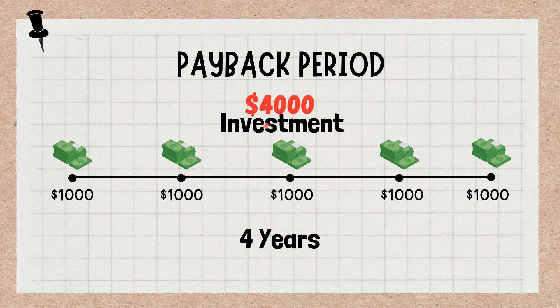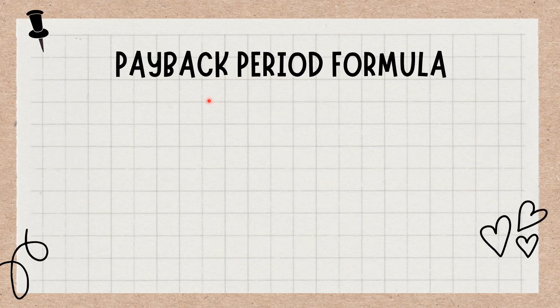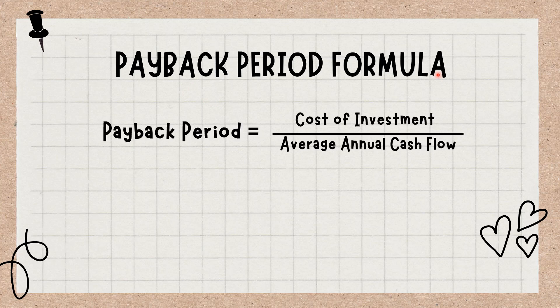In essence, the shorter payback an investment has, the more attractive it becomes. Determining the payback period is useful for anyone and can be done by dividing the initial investment by the average cash flows. You can figure out the payback period by using the following formula: Payback period equals cost of investment divided by average annual cash flow.